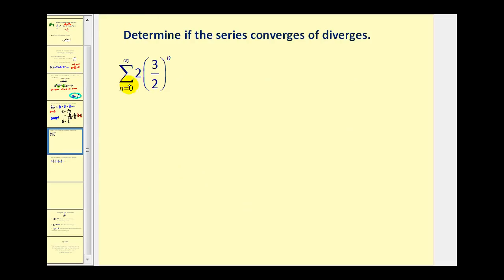On this next problem, we can recognize this as a geometric series and identify the value of r. As n increases, we keep multiplying by another factor of three-halves, so r equals three-halves. We can stop right here because the absolute value of r is not less than one, so this series diverges.